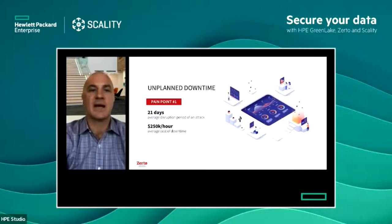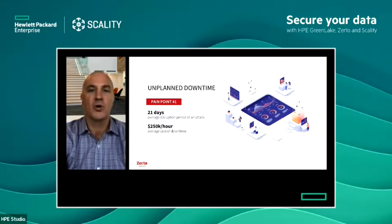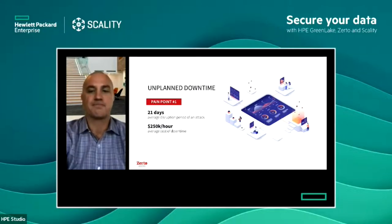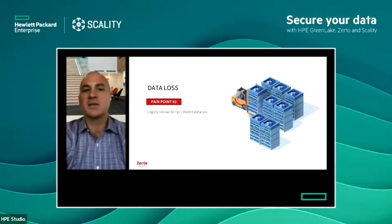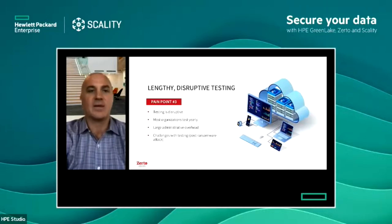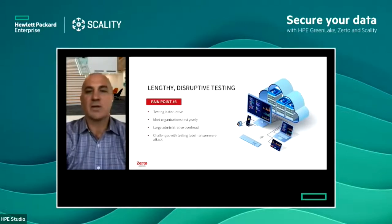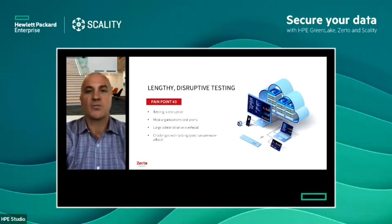Looking at a couple of pain points: unplanned downtime averages 21 days per attack with an estimated cost of $250,000 per hour — significant impact to a business or brand. Pain point number two: data loss. Legacy backup brings inherent data loss — traditional backup windows done periodically, once a day, can lead to lengthy data loss. Pain point number three: testing is disruptive. Most organizations test yearly, with large administration overhead and challenges with testing, especially post-ransomware attack.